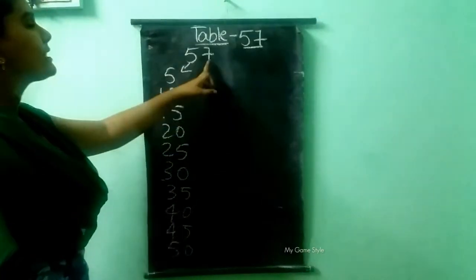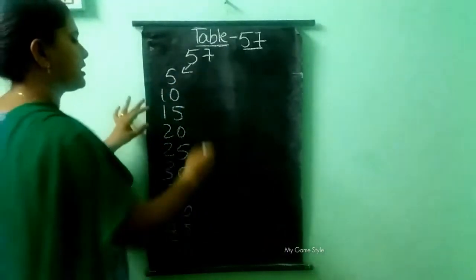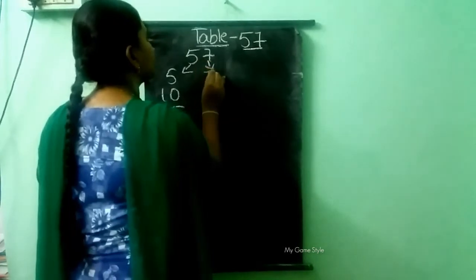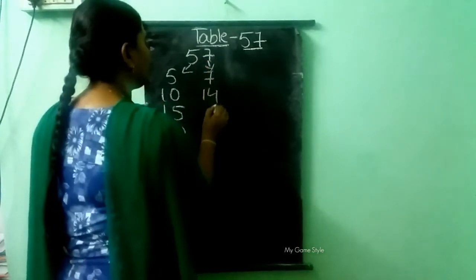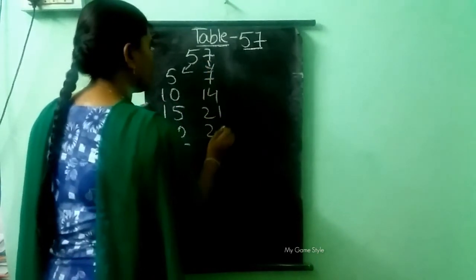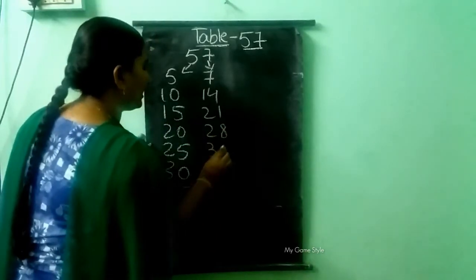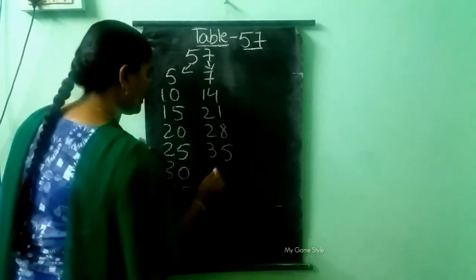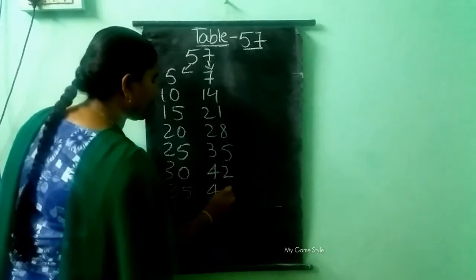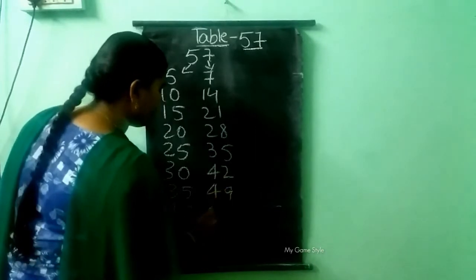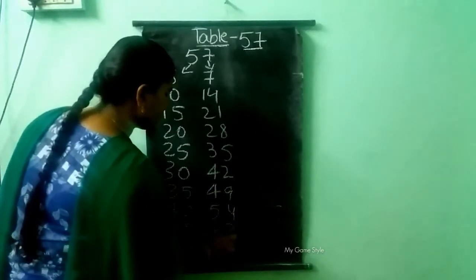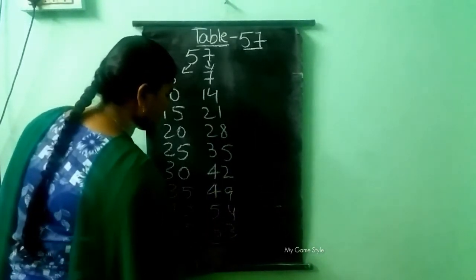Here it is 7. So I am writing the 7 table here, children. 7, 14, 21, 28, 35, 42, 49, 56, then 63 and 70.